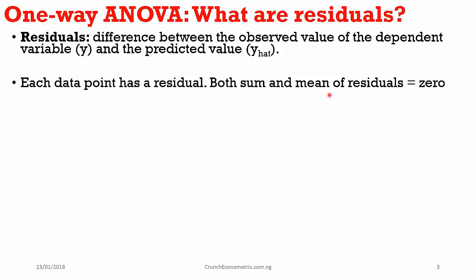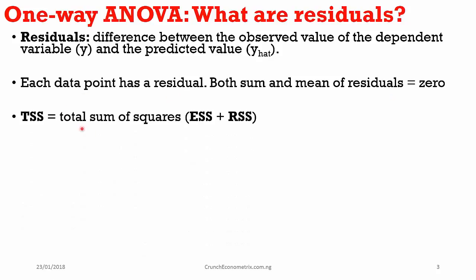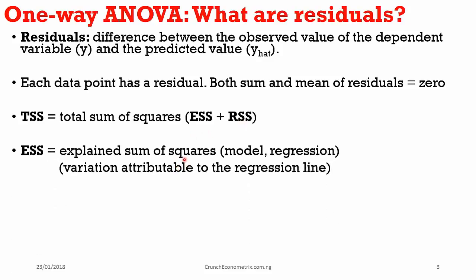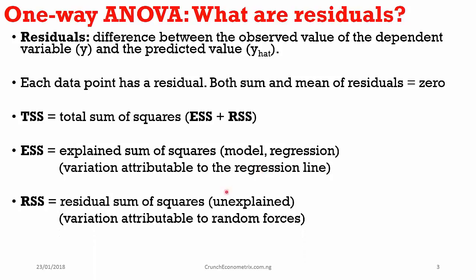The total sum of squares is simply the explained sum of squares plus the residual sum of squares. The explained sum of squares are variations in a dependent variable that you can attribute to your model or regression. While the residual sum of squares, also known as the unexplained sum of squares, are those variations that you cannot attribute to your model but only to random forces.